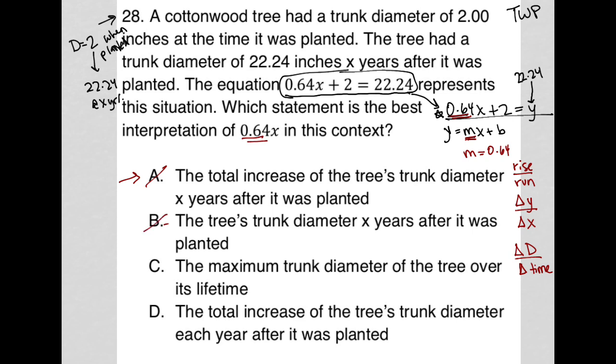Choice C, the maximum trunk diameter of the tree over its lifetime. Nope, not at all. Obviously not because it's at two when you first plant it. So how would it be at 0.64 after its whole lifetime?